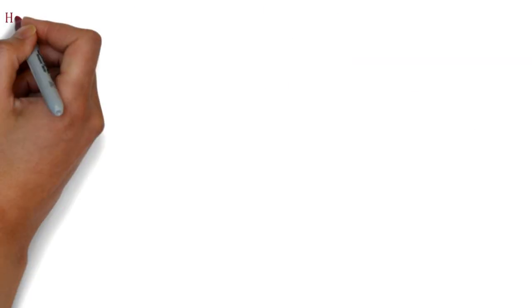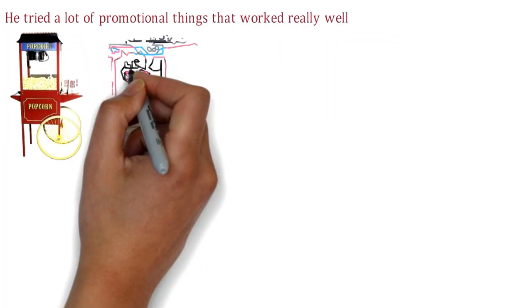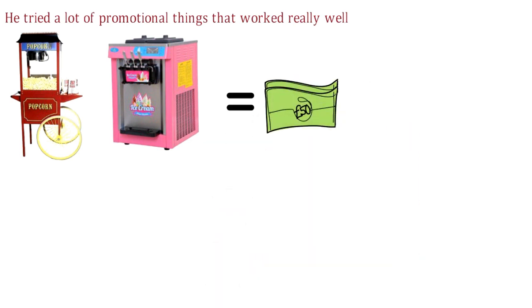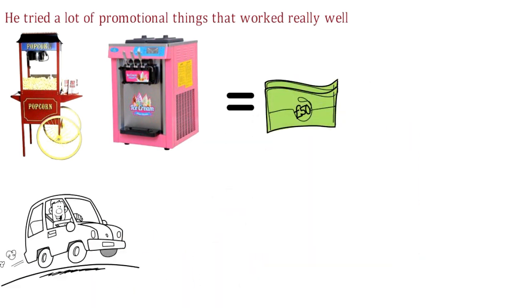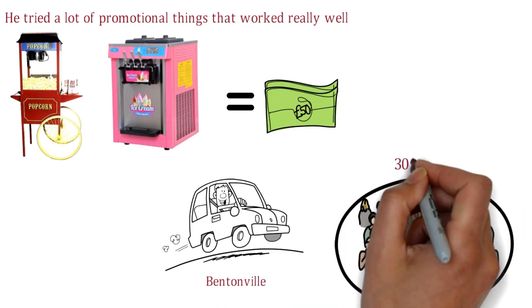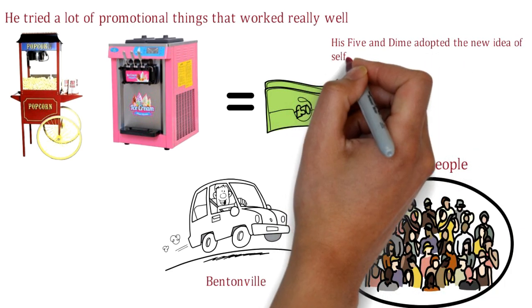He tried a lot of promotional things that worked really well. They put a popcorn machine and ice cream machine out on the sidewalk and made money by controlling expenses. But Sam had to leave the town and the family moved to Bentonville, a small town with only 3,000 people. His five-and-dime adopted the new idea of self-service with checkouts at the front with fluorescent lighting, and the store did well.